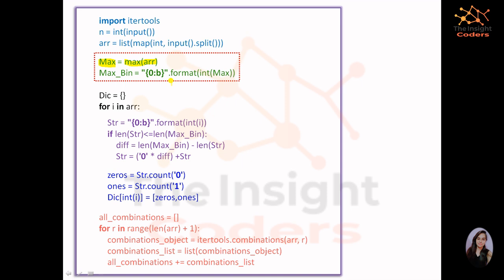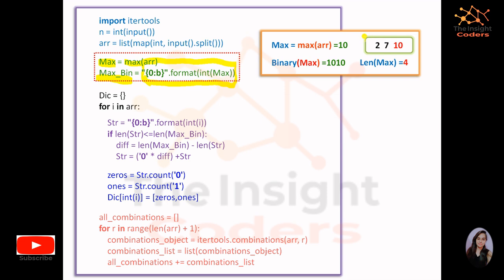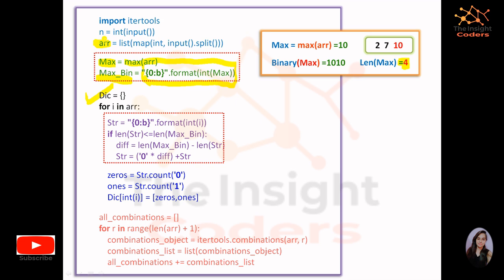In Python, converting a decimal to binary can be done with a single line using the bin() function or using the format in a print statement. It automatically gives the binary equivalent. I'm using a dictionary here — for each element in the array, I convert it to binary, then count the zeros and ones. But before counting, I need to append leading zeros so the length matches the max element's binary length.